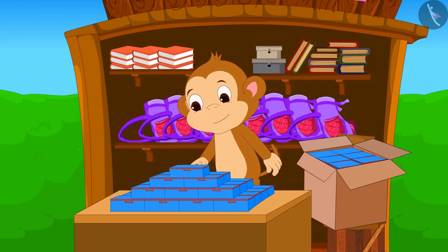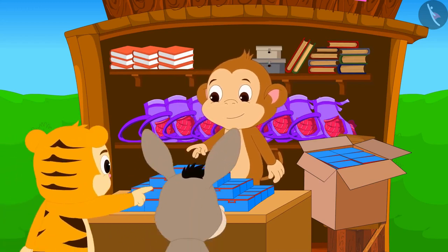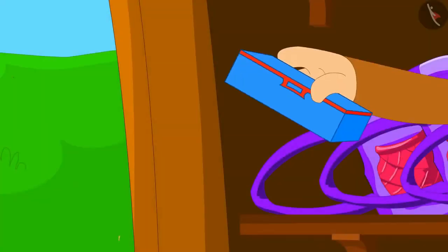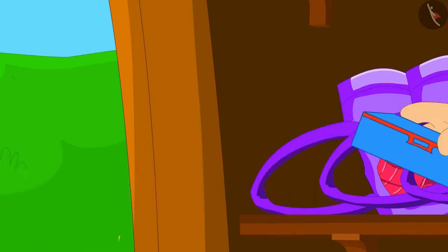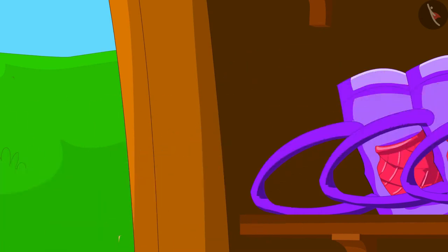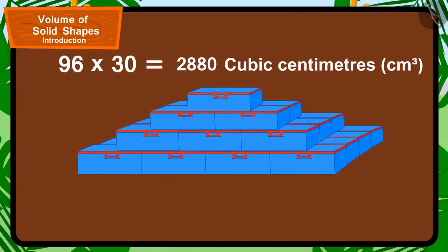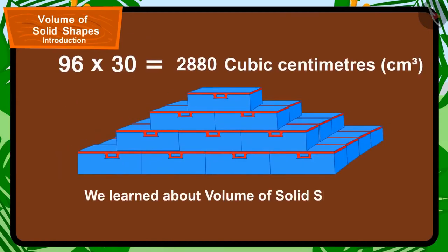Seeing the shape made by Babban, many people started getting attracted towards his shop and the sales of his compass boxes increased. In this video, we learned about volume of solid shapes. In the next video, we will learn more about it by some interesting examples.